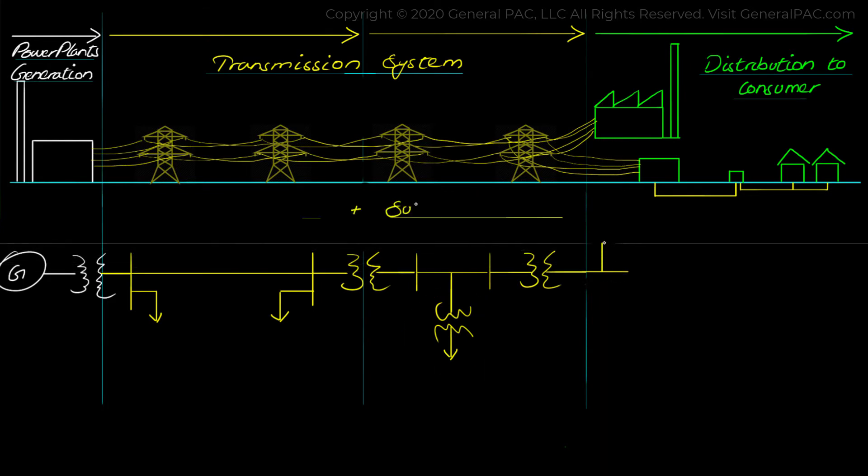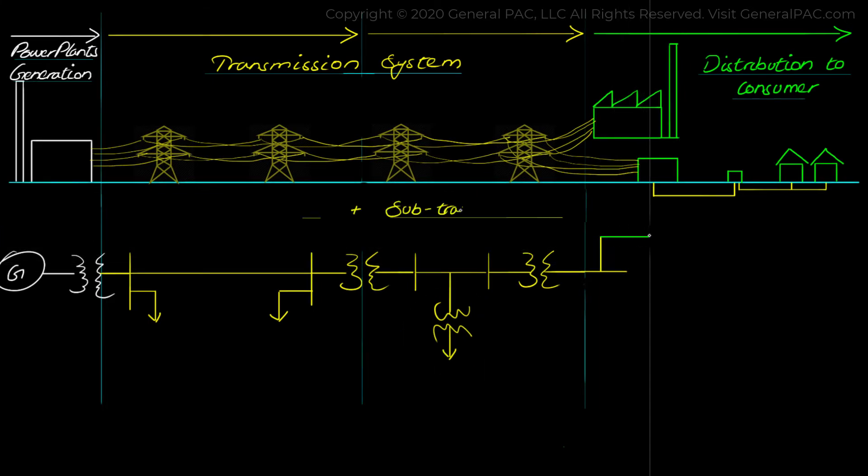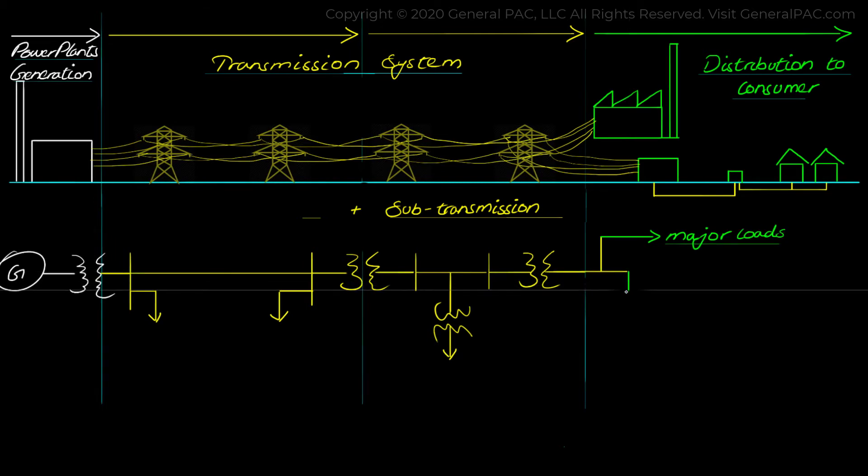Then there comes the sub-transmission system. It steps down the voltage to a lower voltage level and some of the power through here is directly supplied to heavy industries and few large consumers while the remaining power is delivered to a distribution system.